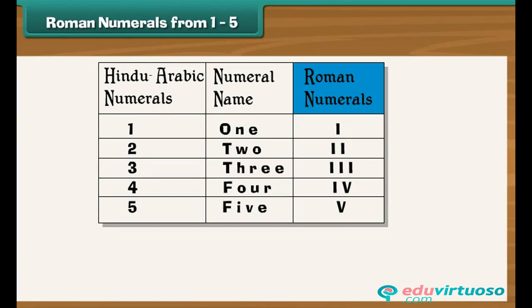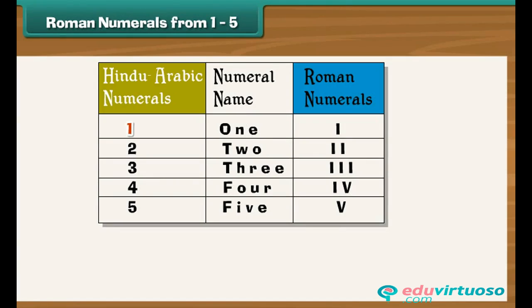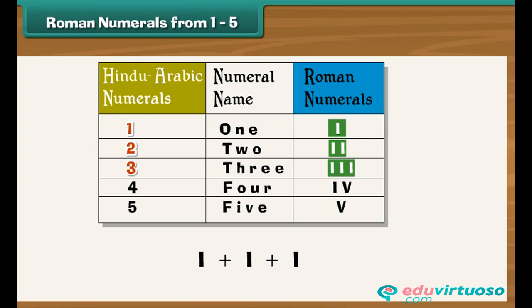The Roman numeral corresponding to the Hindu-Arabic 1 is I. As 2 is 1 plus 1, it is written as two I's. Similarly, as 3 is 1 plus 1 plus 1, it is written as three I's. 4 and 5 are written slightly differently as IV and V.